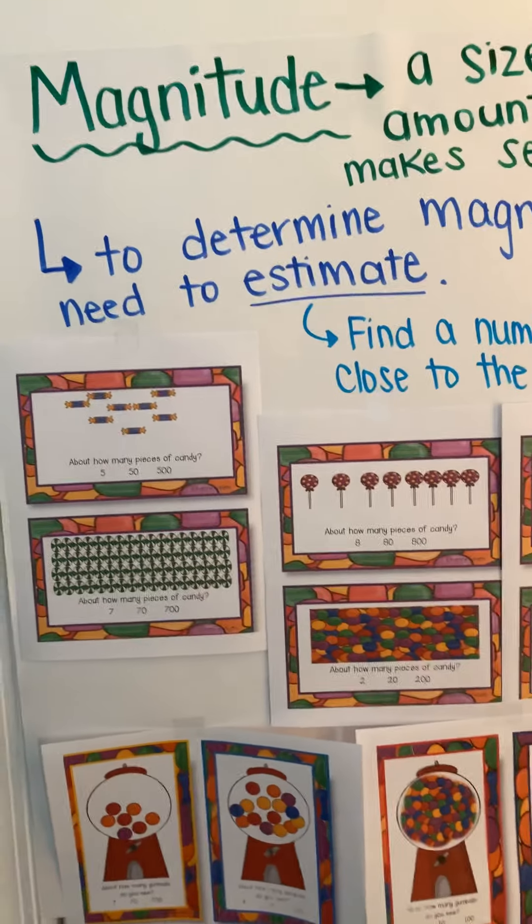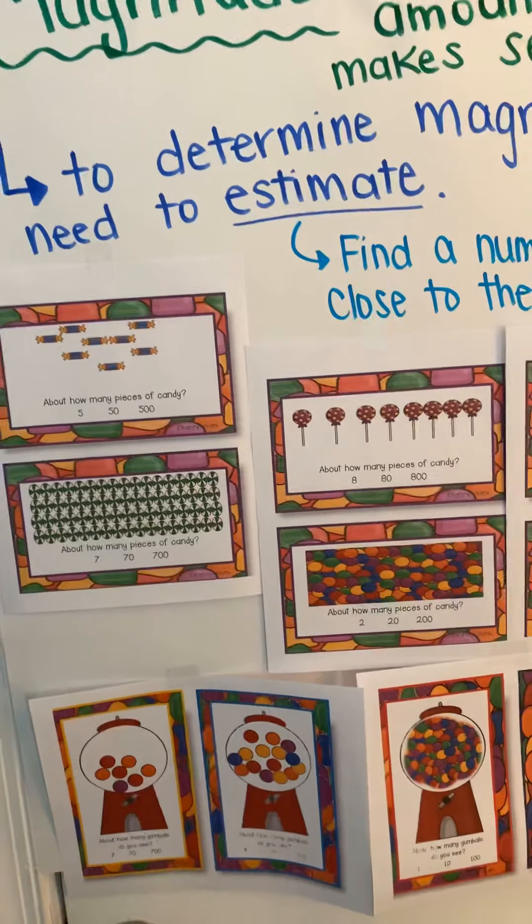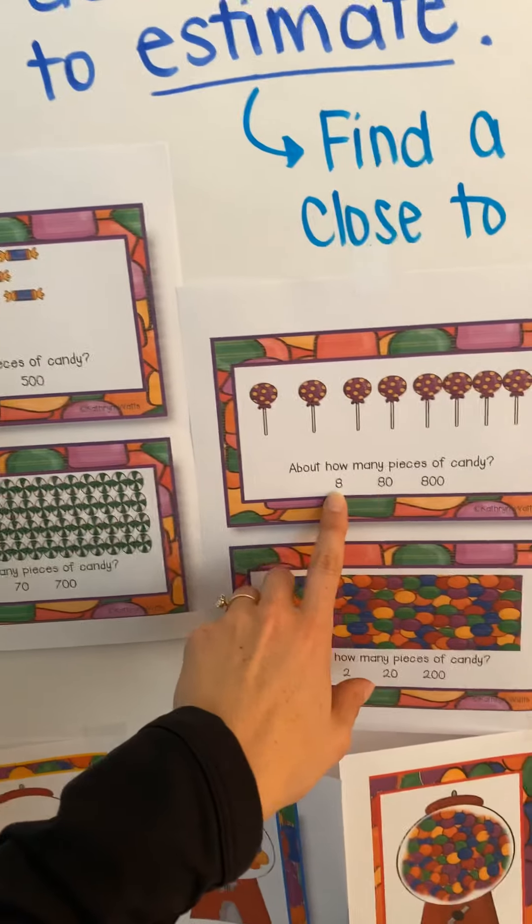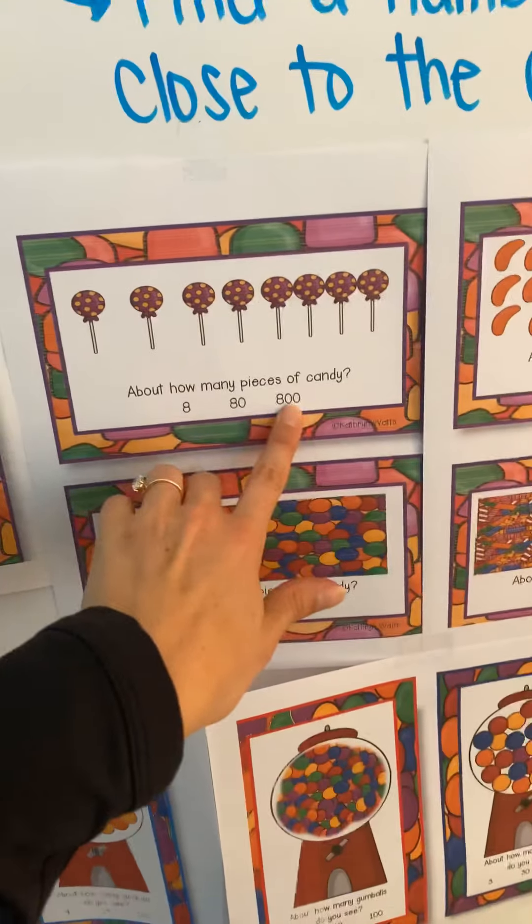Remember, magnitude is the size or amount that makes sense. You are going to give a reasonable estimate or guess of how many there are. We're always working with one-digit, two-digit, or three-digit numbers — those are what we go for when we're taking a guess. If you want to practice at home, you can fill Tupperware or a clear drinking glass. Maybe your brother, sister, mom, dad, or whoever you have at home could fill it up and give you three choices — with pennies, cereal, goldfish, pretzels, cotton balls, anything you have. Then ask: what's the magnitude? Is it more like three, thirty, or three hundred? What makes the most sense?